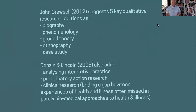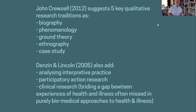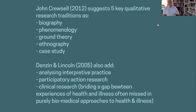Towards the end, Creswell suggests five key qualitative research traditions. Sometimes it may be biography — you may be writing a story about an individual, individuals, societies, or peoples. It could be that you're exploring various types of phenomena and trying to understand them, such as the difference between victims, survivors, and thrivers. It could be a specific methodology called grounded theory, which is worth looking up to ask whether that's the suitable approach for you.